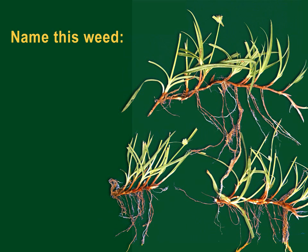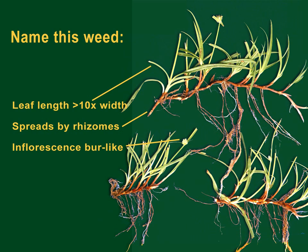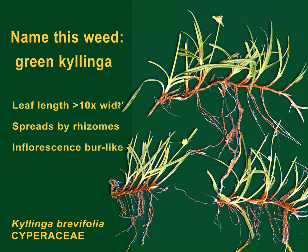Grass-like, but not really a grass, is this plant. Its leaves are more than ten times as long as wide. It spreads by underground runners called rhizomes, and the inflorescence is burr-like. Looking at the top of this plant from the leaf whorl up, the leaves are arranged in three ranks, and if you twirled the stem with your forefinger and thumb, you'd feel a little edge to it. This is green kylinga — sedges have edges. It is a sedge, a member of the Cyperaceae, which is a sister family of grasses.